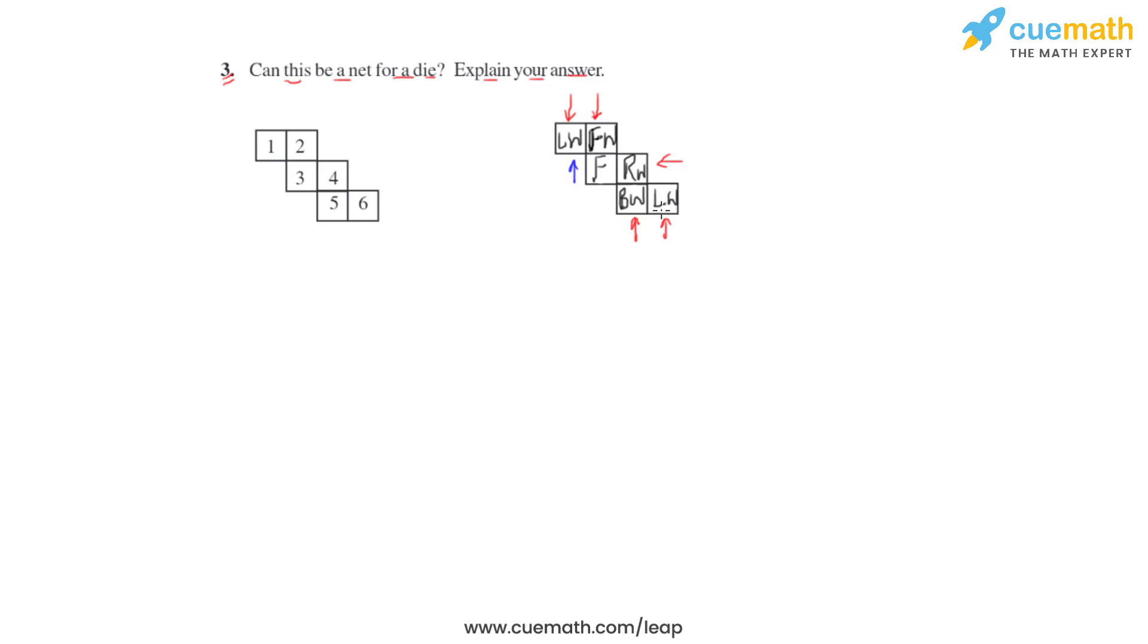We can say we will get two squares of the net which will overlap, and hence we will not get the sixth face of the die which should have been formed as the ceiling of the room. Therefore, this net would not give us a die.